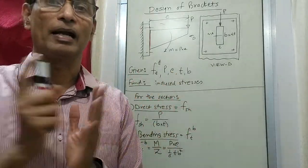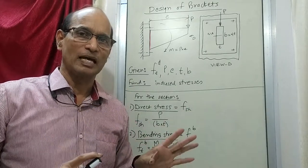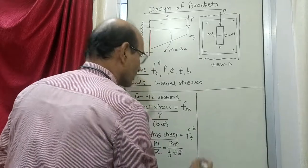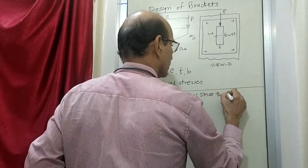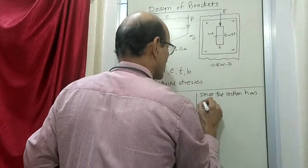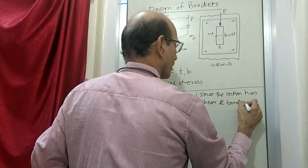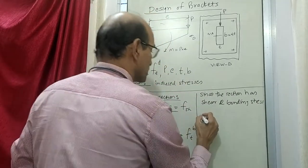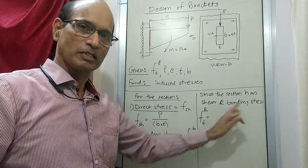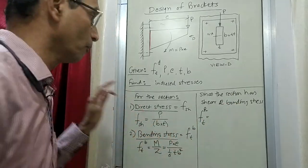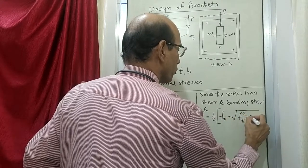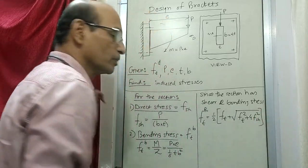As we have seen earlier, we are not supposed to add them just by numerical addition. There is a square root equation which implies that there are going to be principal stresses. Since the section has shear as well as bending stresses, principal stress will now come into picture. So F_T_principal is equal to half of F_T plus the square root of F_T squared plus 4 times F_shear squared. So this is the formula which we are supposed to make use of.